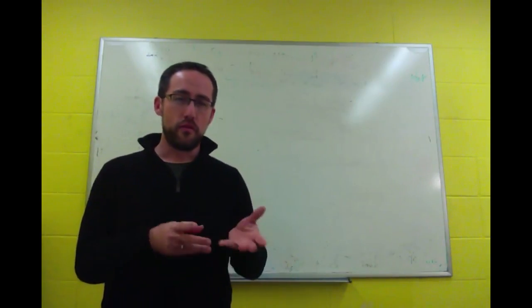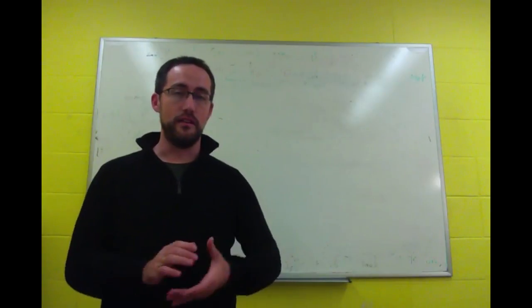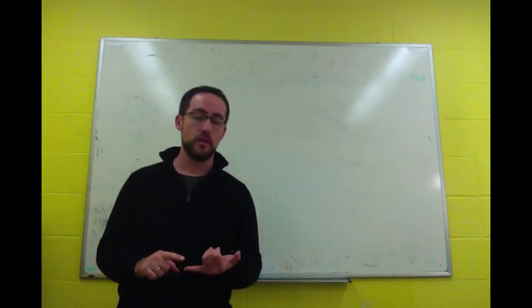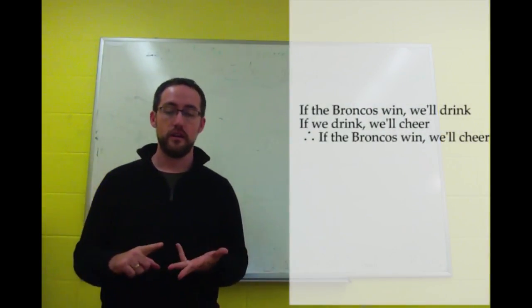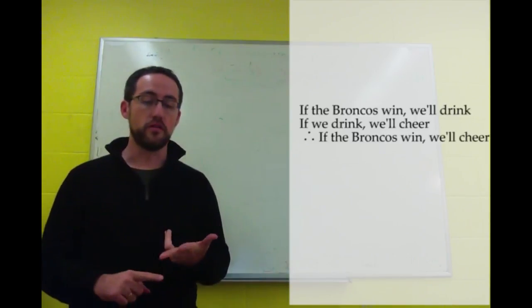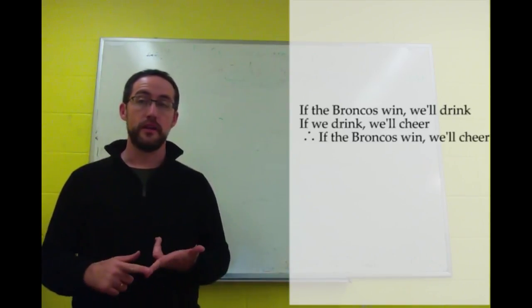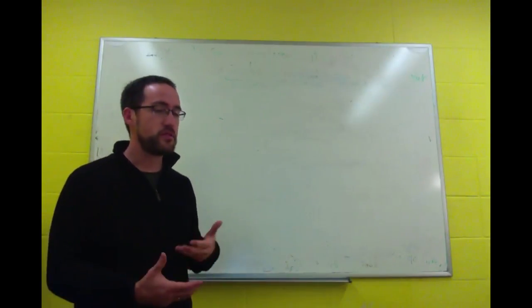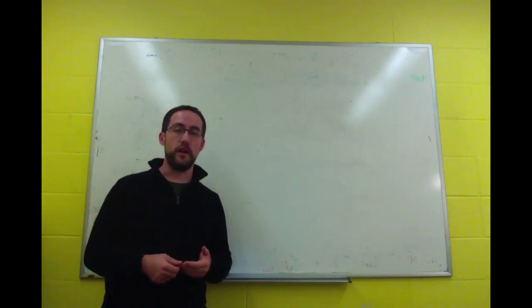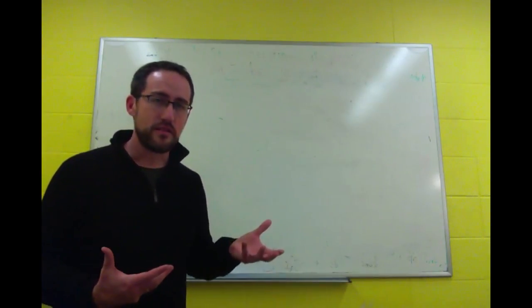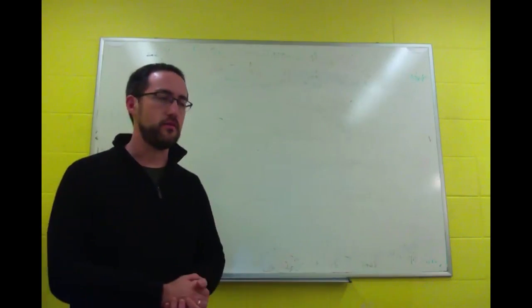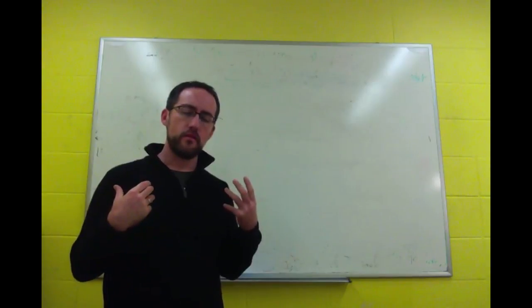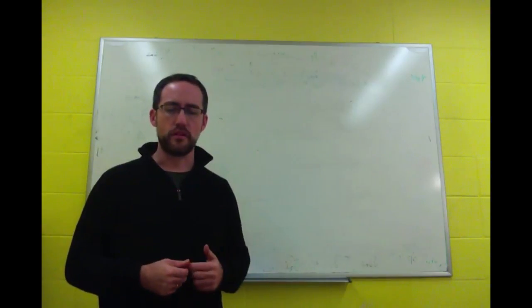Now, where the formal part comes in is when we're trying to generalize over these kinds of syllogisms. So here's another example: if the Broncos win, we'll drink. If we drink, we'll cheer. So if the Broncos win, we'll cheer. That is as true as a syllogism. That'll work as well. But it has the same structure as if it rains, we'll get wet. And if we're trying to understand how this logic works, which is what philosophers spend a lot of time doing, then we want to have a generalization. Why do these arguments work this way?